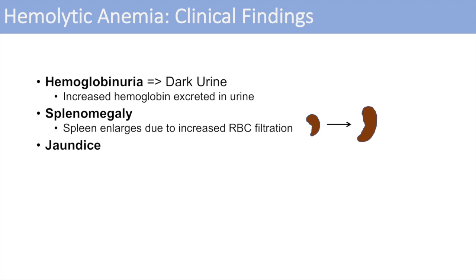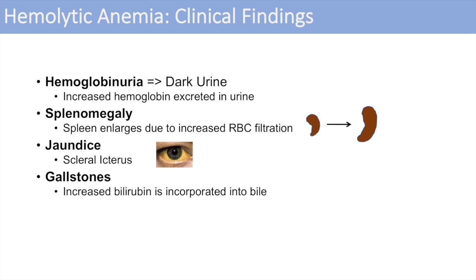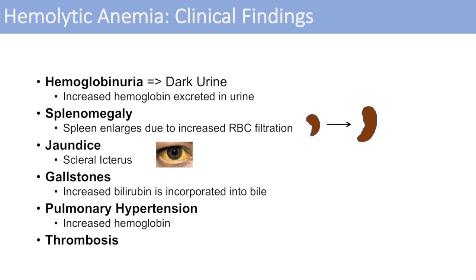Another clinical finding is jaundice, due to increased levels of bilirubin. One indication of jaundice is scleral icterus, which is yellowing of the whites of the eyes. Another finding is gallstones, again due to increased bilirubin — bilirubin is incorporated into bile, leading to increased bile formation and resulting in more gallstones. Additional findings include pulmonary hypertension due to increased hemoglobin, and thrombosis, which is due to a multitude of factors.